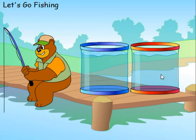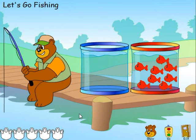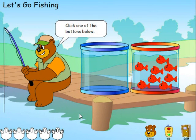So first of all we're going to get a lesson and then we'll do the activity. We will fish to make sets that are more than, less than, or equal to the set of red fish on the right. You'll also notice right through the program, for Grade Nought through 3, the math rack perceptual skills are building. We talk about the red fish on the right-hand side, for instance.